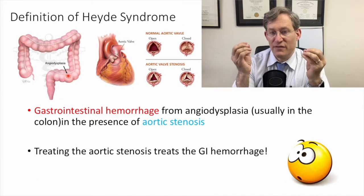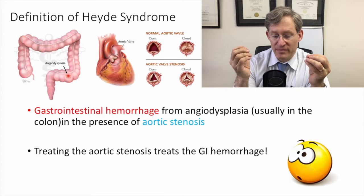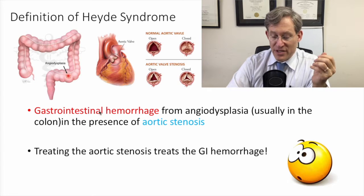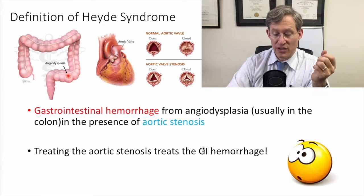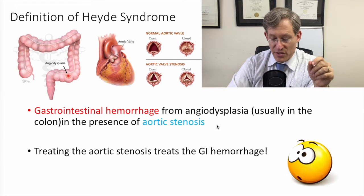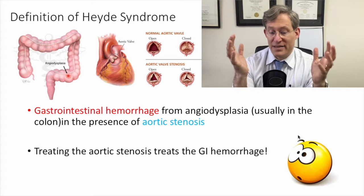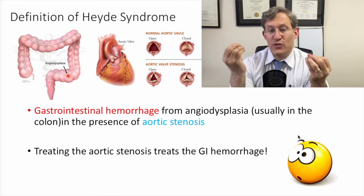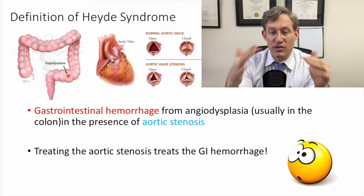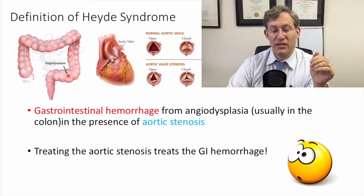So the definition of Heyde Syndrome, as you can see here from the slide, is gastrointestinal hemorrhage from angiodysplasia, usually in the colon, in the presence of aortic stenosis. And as I mentioned before, if you treat the aortic stenosis, usually the lower GI bleeding goes away.